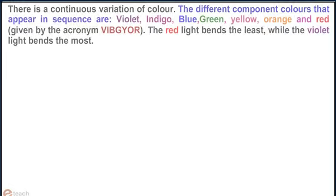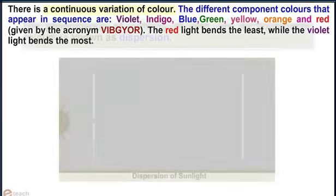The different component colours that appear in sequence are violet, indigo, blue, green, yellow, orange and red, given by the acronym VIBGYOR. The red light bends the least while the violet light bends the most.